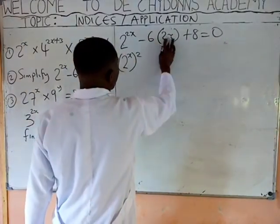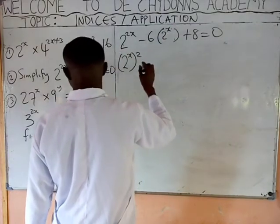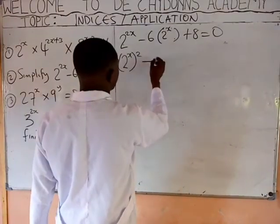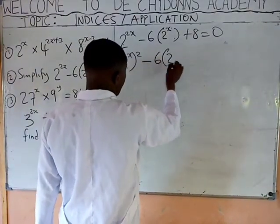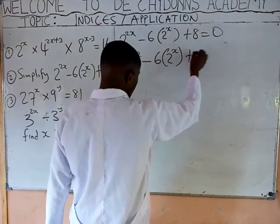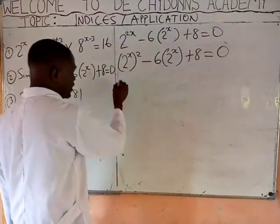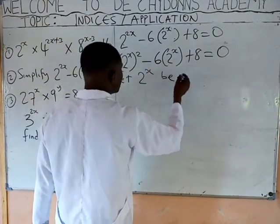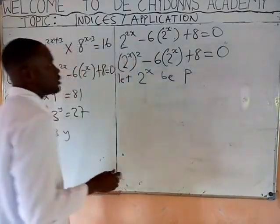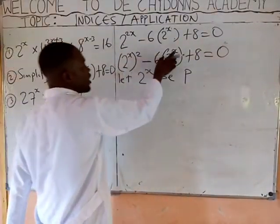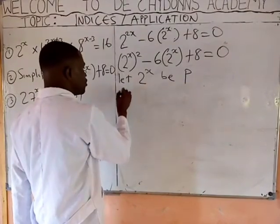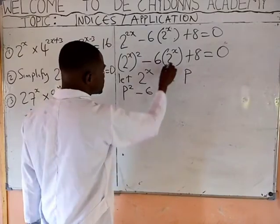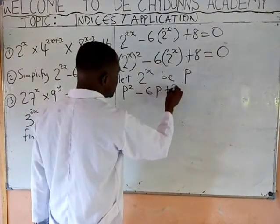This simply means minus M: 2 raised to the power of X, minus 2 raised to the power of X, minus C, bracket 2 raised to the power of X plus 8 equals 0. Let 2 raised to the power of X be P. Change 2 raised to the power of X with that alphabet. That gives you P squared minus 6P plus 8 equals 0.